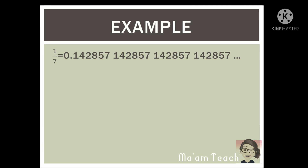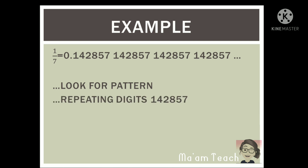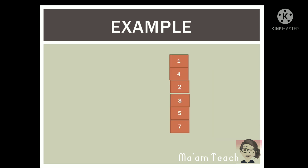Now, based from this, we can look for a pattern. What is the pattern here? The pattern is the repeating digits which are 1, 4, 2, 8, 5, 7. So it repeats. So what can we conclude from here? These 6 repeating digits will be the basis of our solution.